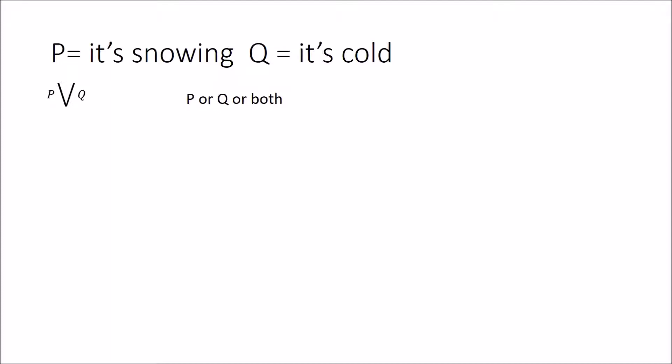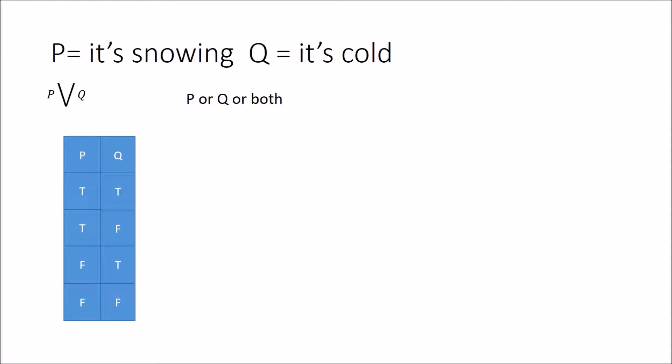Let's look at what circumstances this OR statement will be true. This is called a truth table, in which we test the different combinations of P and Q, using T for true and F for false. In the first row, both are true — it is snowing and it's cold. The second two are also true because only one of them has to hold for the OR to work.